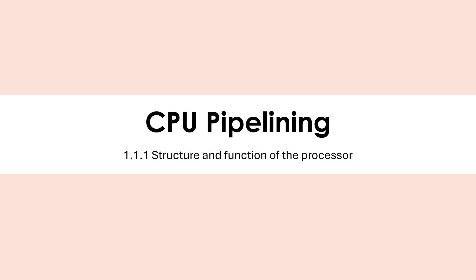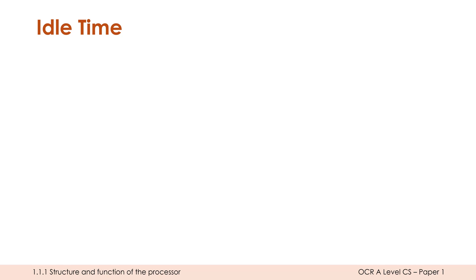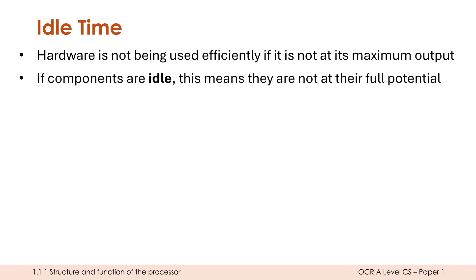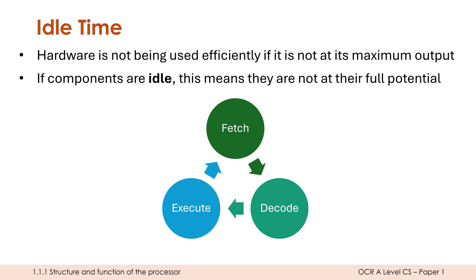Let's talk about CPU pipelining — definitely one of the harder concepts in this topic. It's all about improving efficiency and performance of your CPU. If hardware is not being used efficiently, it's not at its maximum output or full potential. Idle time is when a component is doing nothing, and pipelining tries to cut down on this. In the fetch-decode-execute cycle, if only one stage is active, the other two are doing nothing.